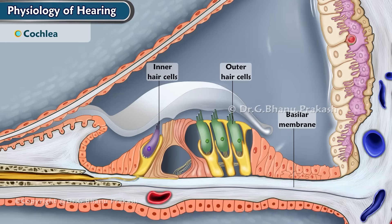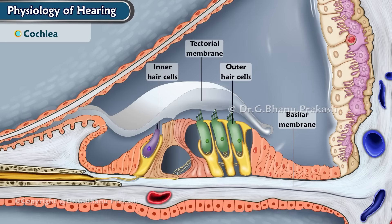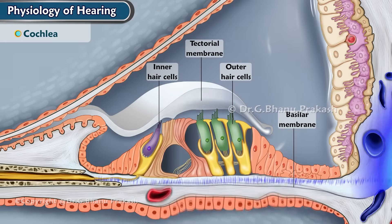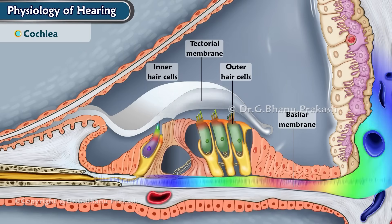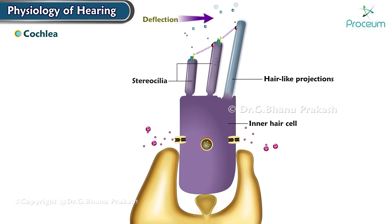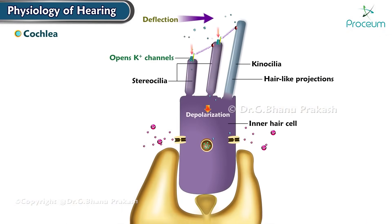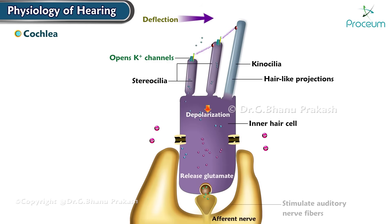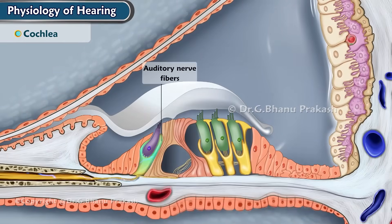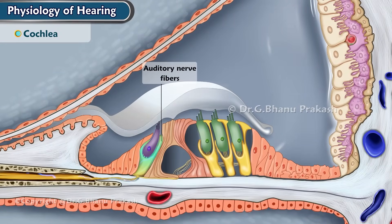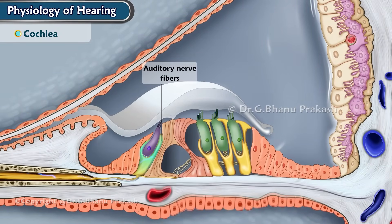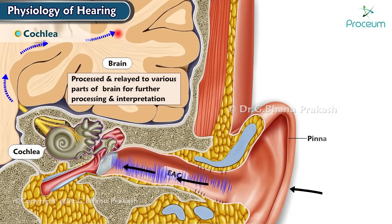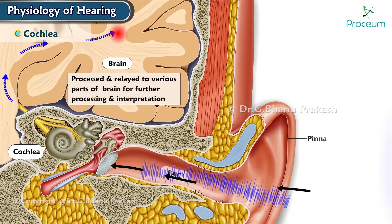The hair cells are embedded in the tectorial membrane, a gel-like structure that overlies the hair cells. As the basilar membrane vibrates, the hair cells move back and forth, causing their hair-like projections to bend. This bending of the hair cells triggers the release of the neurotransmitter glutamate, which in turn stimulates the auditory nerve fibers connected to the hair cells. The auditory nerve fibers then transmit electrical signals from the cochlea to the brain stem, where they are processed and relayed to various parts of the brain.